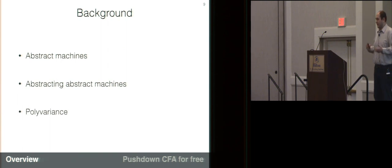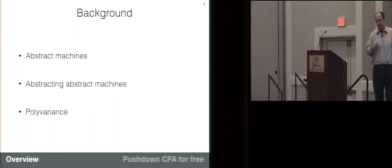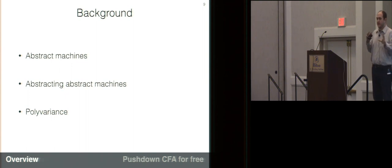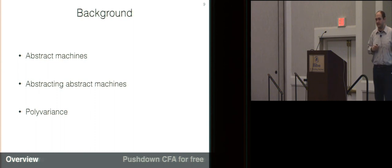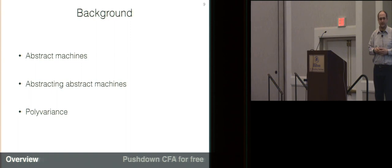To keep everybody on board — many of whom probably haven't seen this style of analysis before — I'm going to give a lot of background. I'll talk about abstract machines, turning them into a static analysis, and then polyvariance and how we can tune the precision of an analysis like this, before we get into the central problem and solution of the paper.